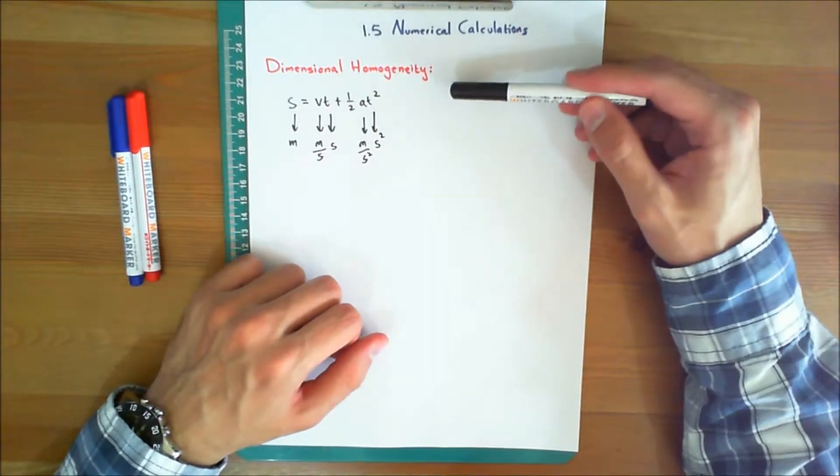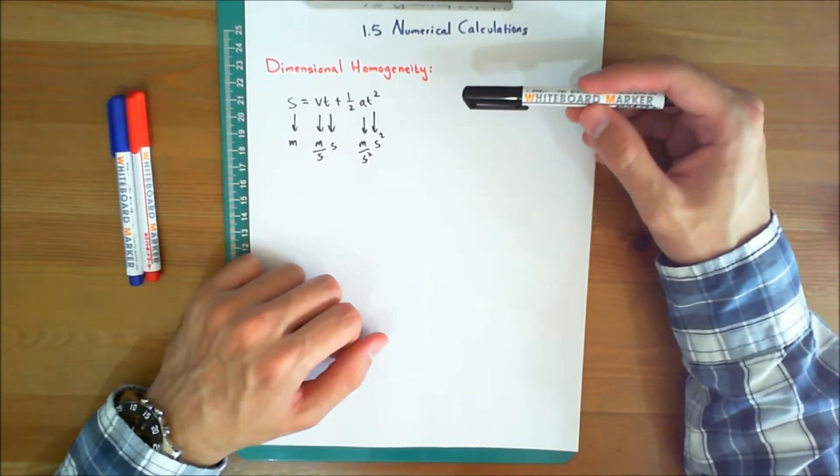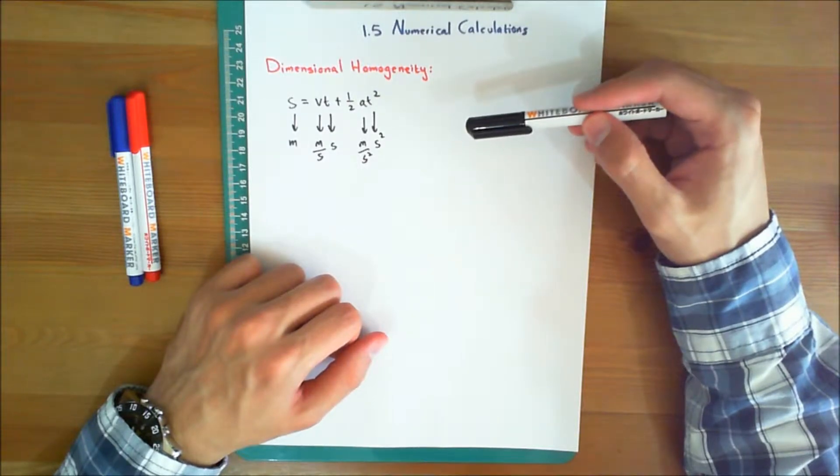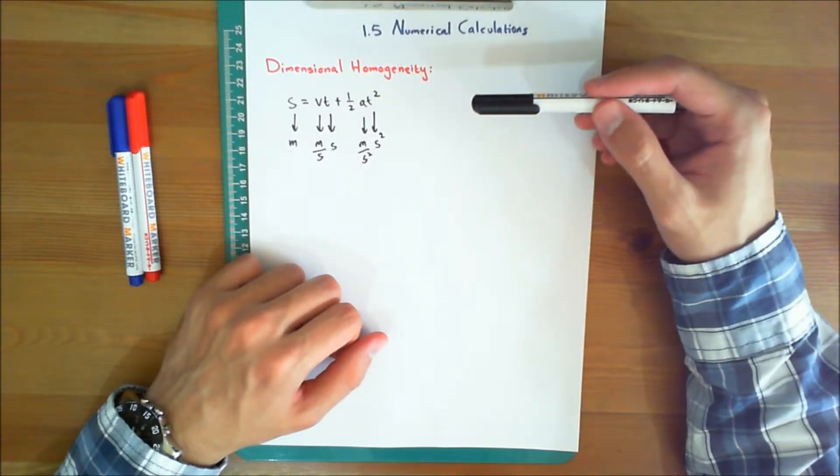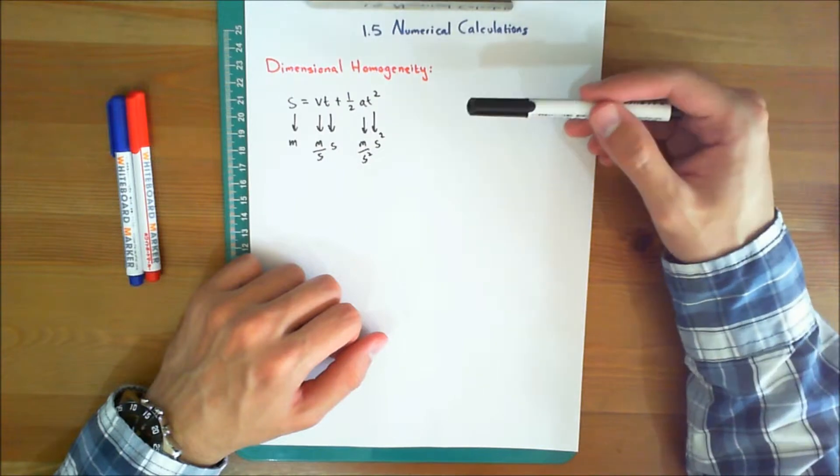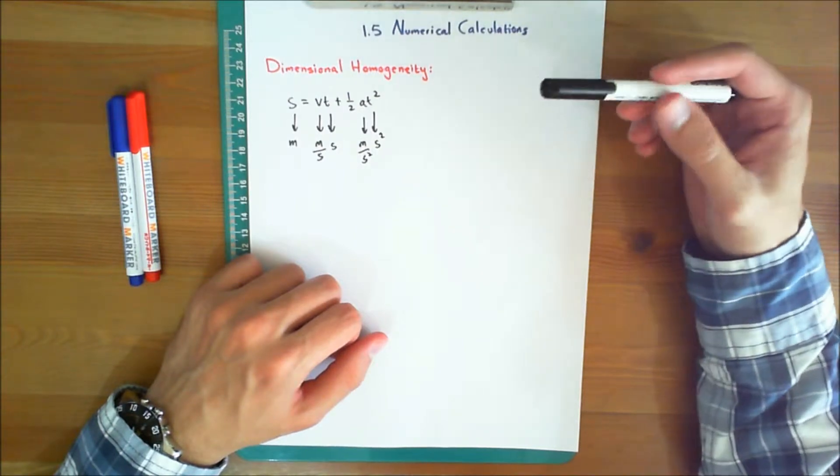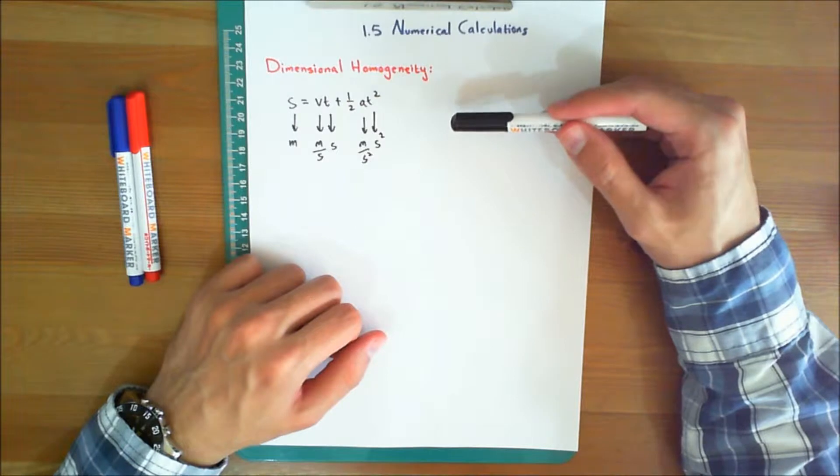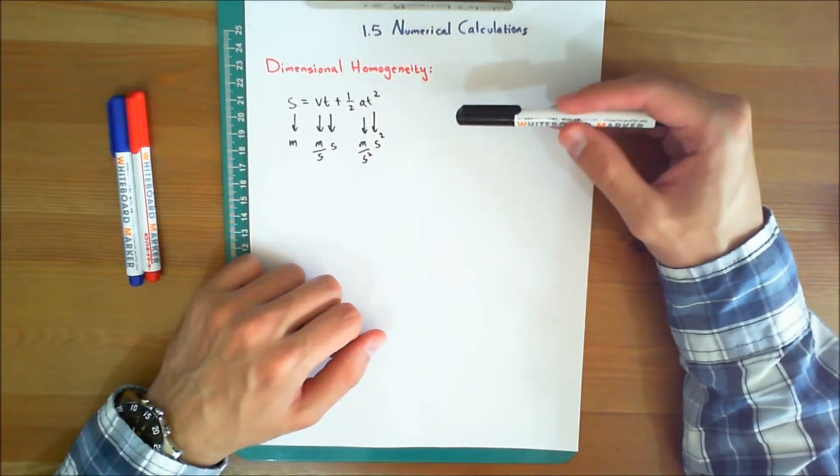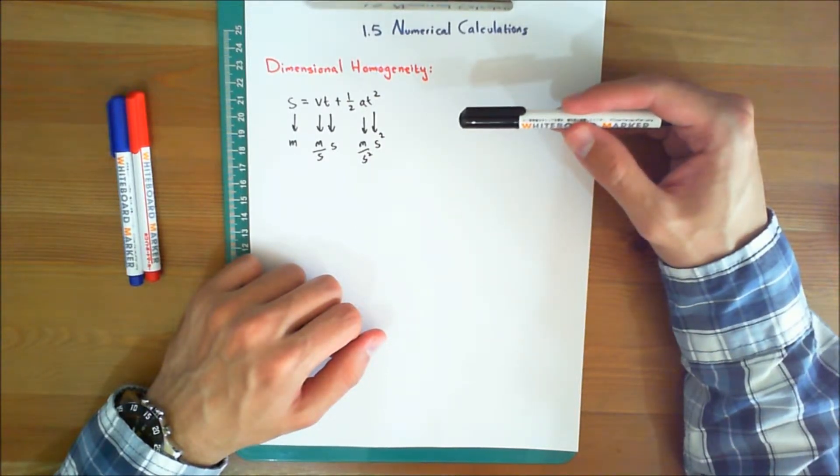Dimensional homogeneity. The terms of any equation used to describe a physical process must be dimensionally homogeneous, that is, each term must be expressed in the same units. Provided this is the case, all the terms of an equation can then be combined if numerical values are substituted for the variables.